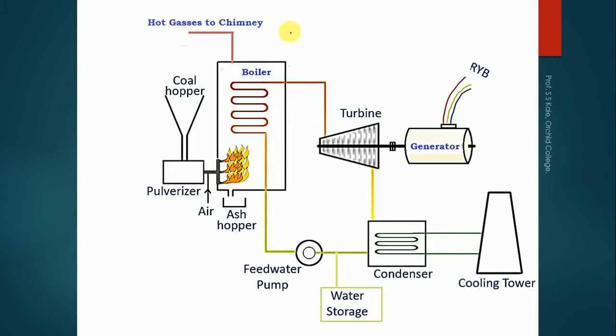Welcome back. Today we are going to discuss about a thermal power plant. Power plants are components used for generating electricity. There are various types of power plants like hydro power plant, thermal power plant, nuclear power plant, gas turbine power plant, and diesel power plant. In the thermal power plant, we are going to have a turbine and generator.